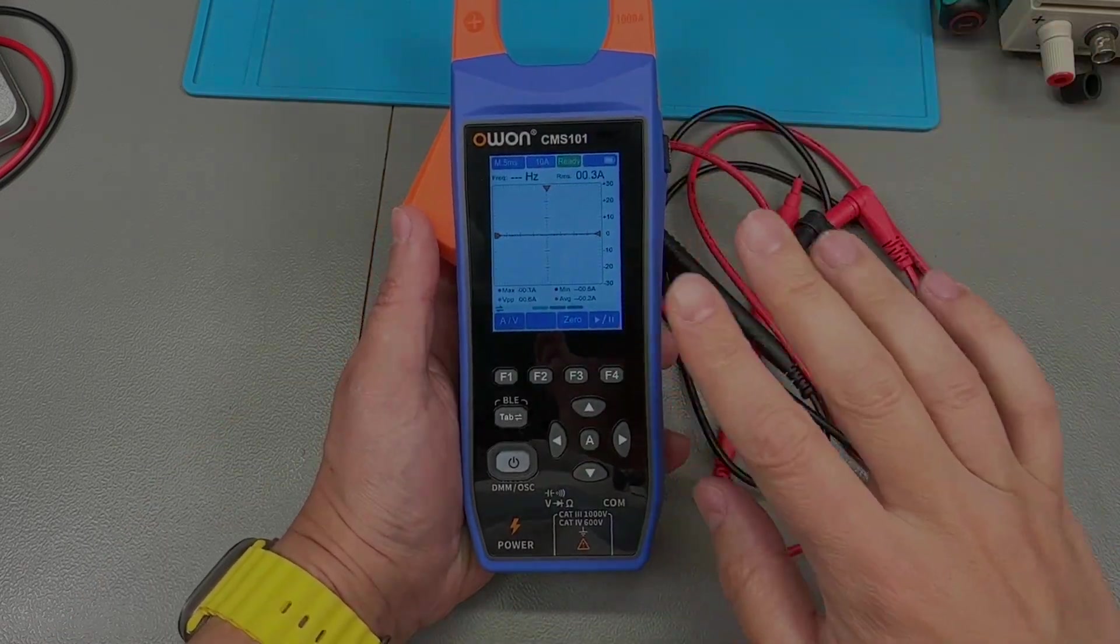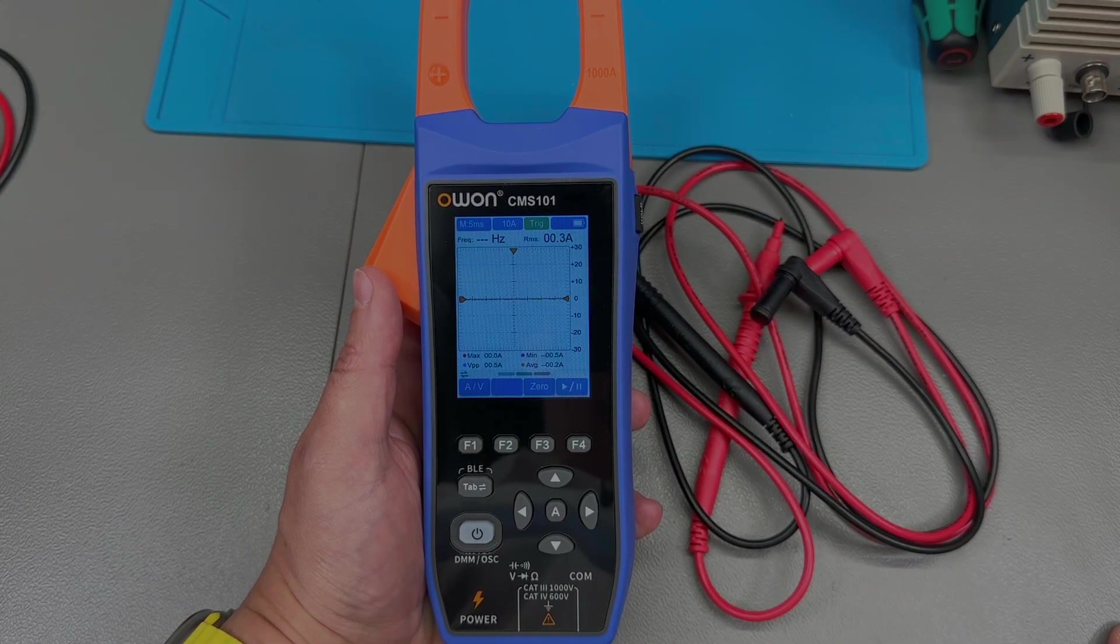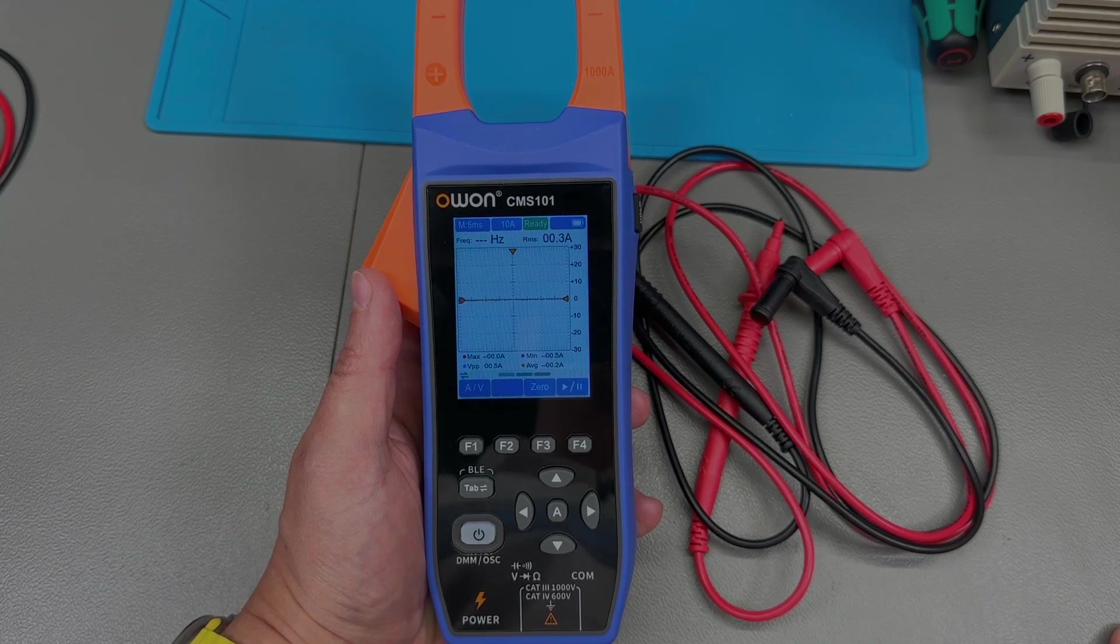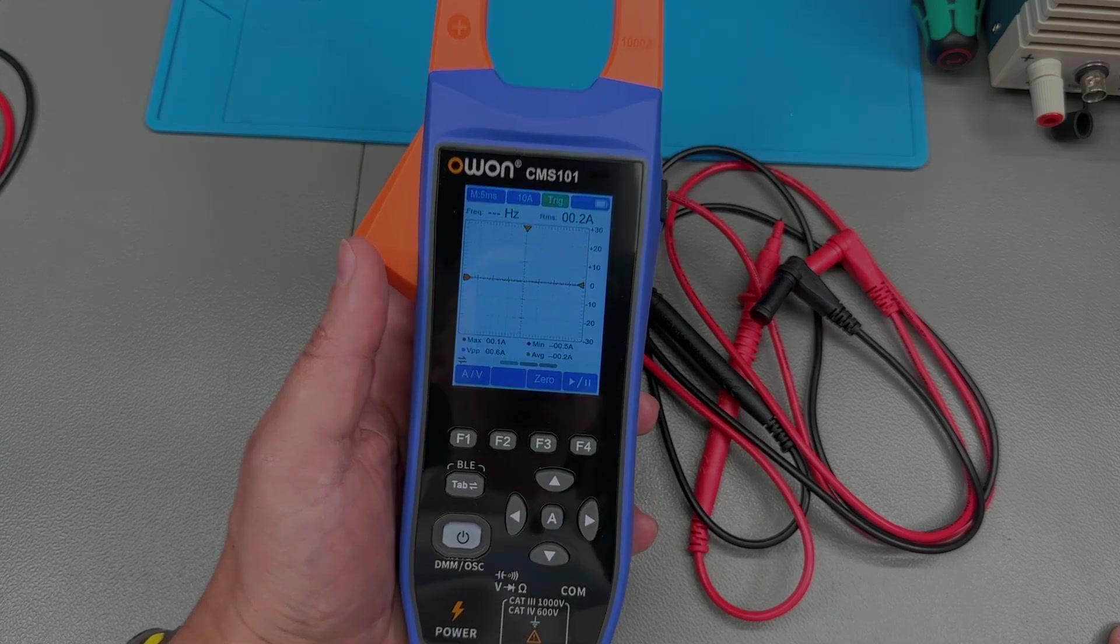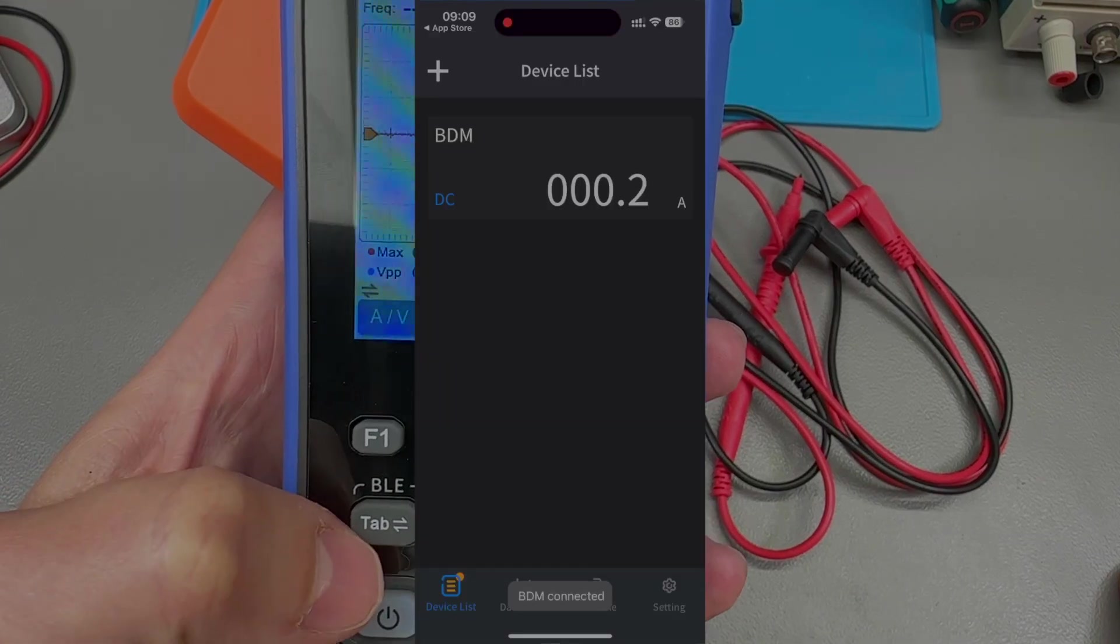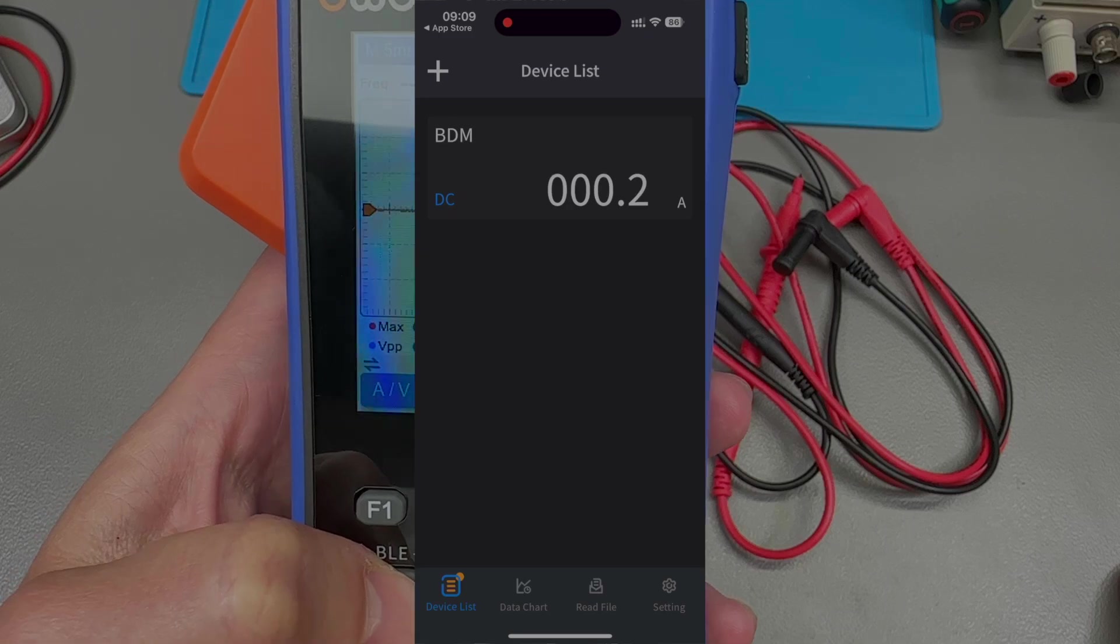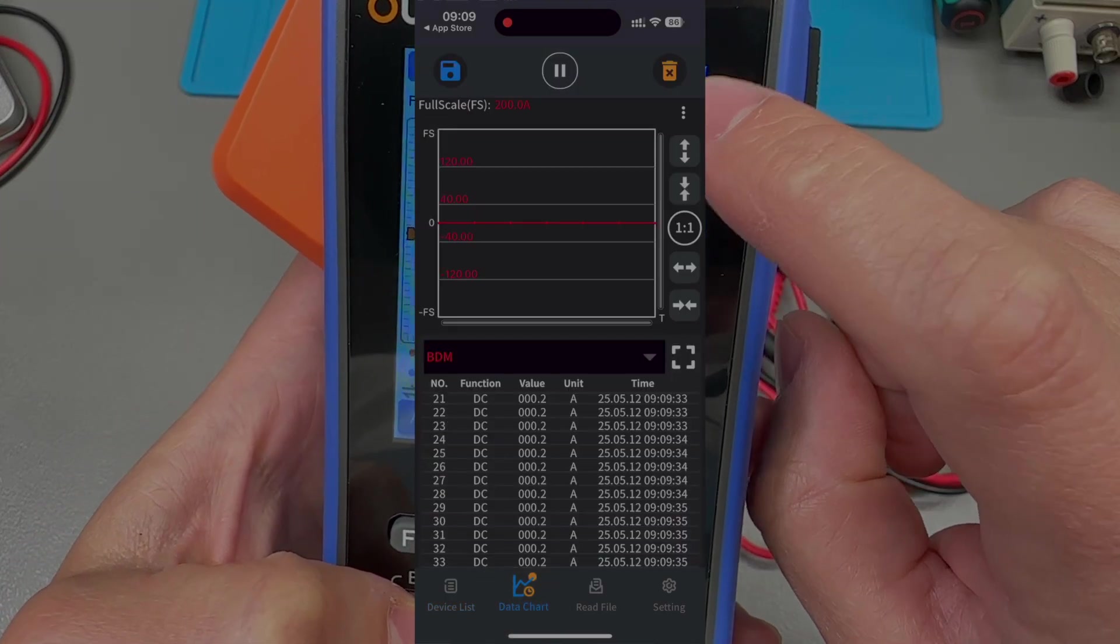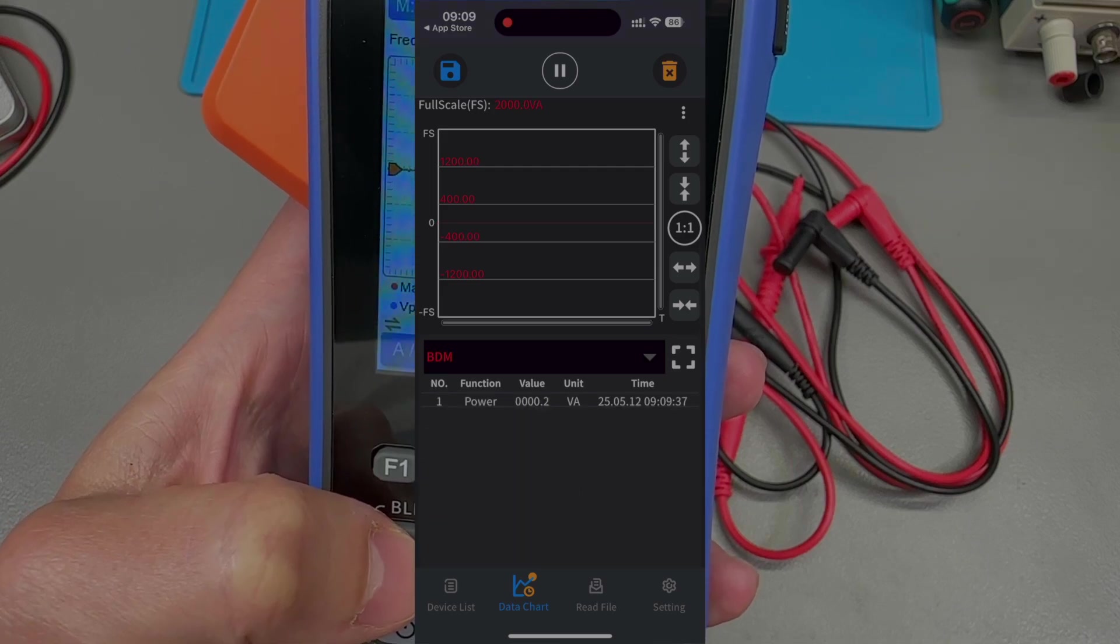Now on top of all of these, the multimeter does contain a Bluetooth interface, and if you install their app, which is called Owon iMeter, available for both iOS and Android, you have to activate the BLE connection by a long press on this button, and it will start showing a Bluetooth icon up there next to the battery indicator.